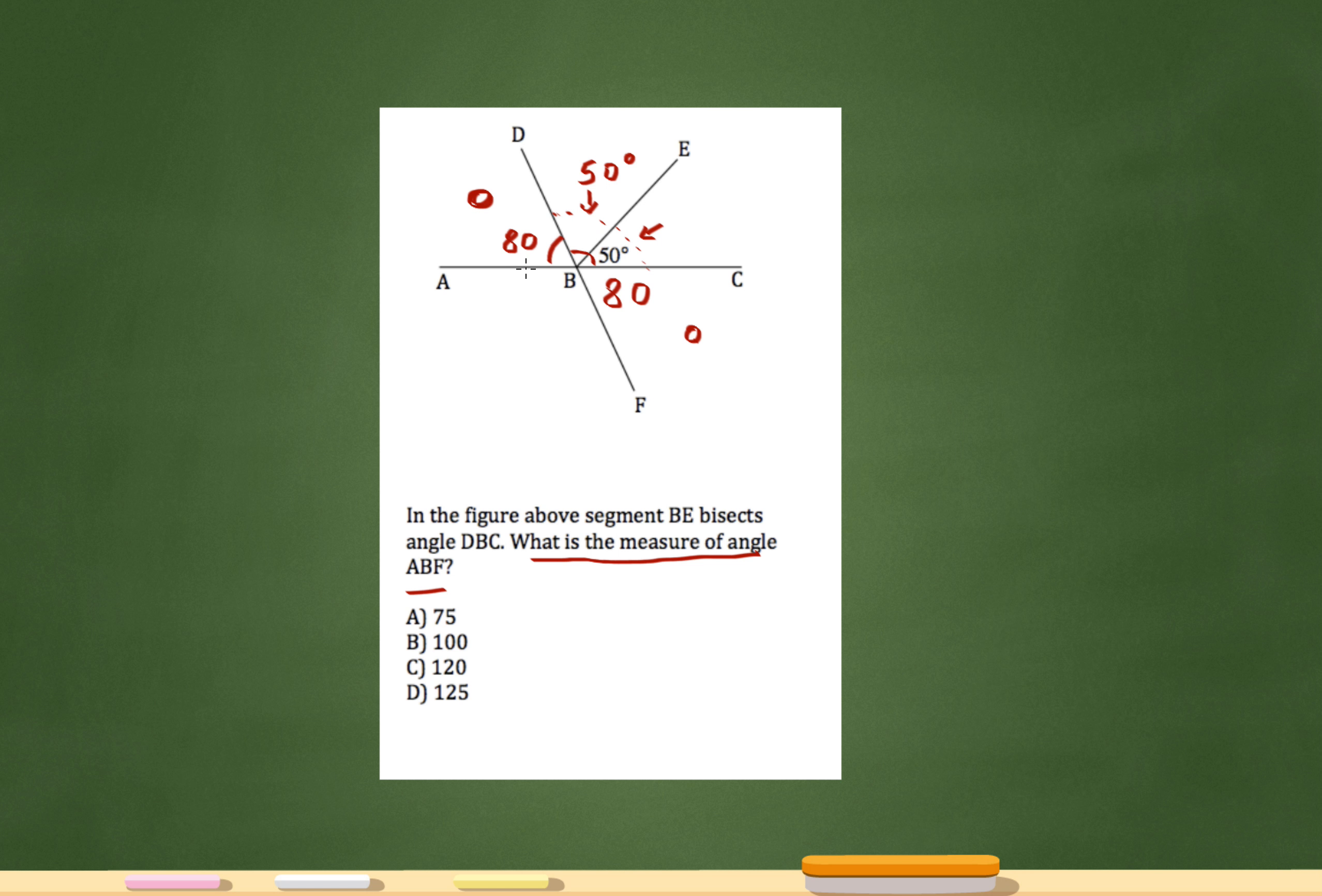Now, the question is saying what is the measure of angle ABF? If BCF, sorry, if CBF is 80, that means that ABF must be 100. Because these two angles right here must add up to 180. And that's why this answer is B.